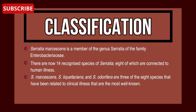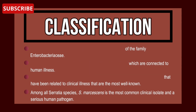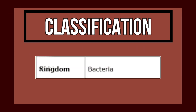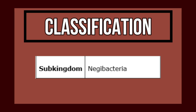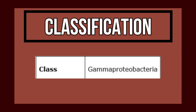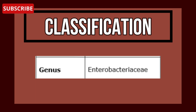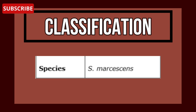Serratia marcescens, Serratia liquefaciens, and Serratia odorifera are three of the eight species related to clinical illnesses. Serratia marcescens is the most common clinical isolate and a serious human pathogen. It belongs to the kingdom Bacteria, sub-kingdom Negibacteria, phylum Proteobacteria, class Gammaproteobacteria, order Enterobacteriales, family Enterobacteriaceae, genus Serratia, and species marcescens.